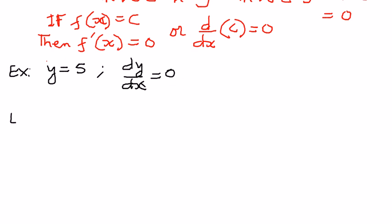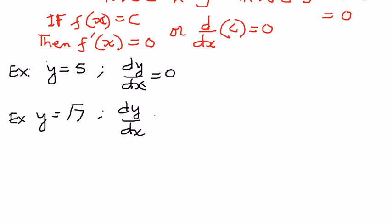Let's take another example. If y is equal to the square root of 7, and we want to differentiate it, dy by dx is going to be equal to 0, because the square root of 7 is a constant number — it does not have any x variables attached to it.